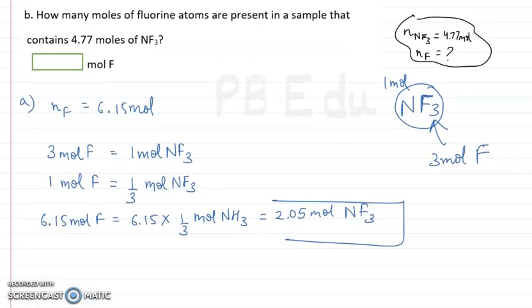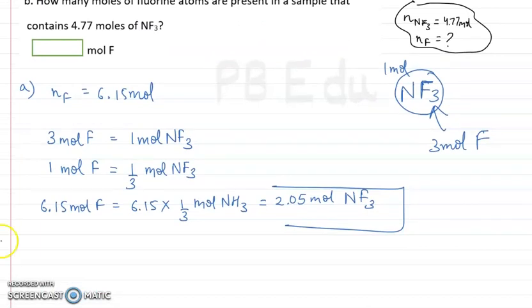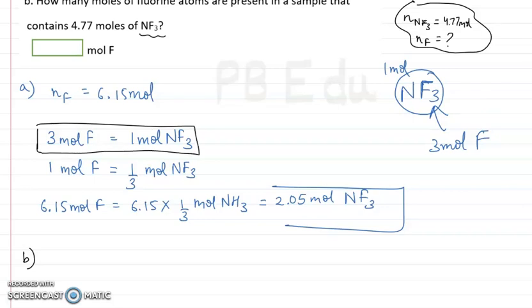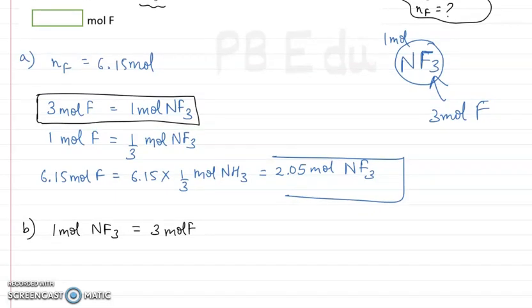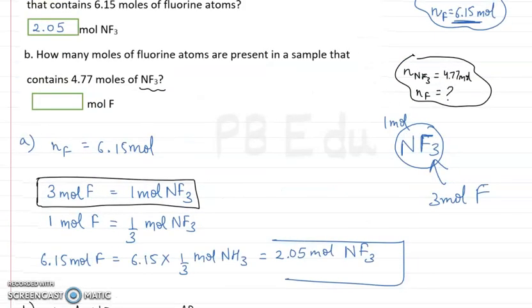Now we will do part B. In part B we are given with moles of NF3 and we have to find out moles of fluorine atom. We will write the relation in reverse form — RHS becomes LHS and LHS becomes RHS. So 1 mole of NF3 has 3 moles of fluorine atoms. We know that from the formula of the compound. We are given with 4.77 moles of NF3.